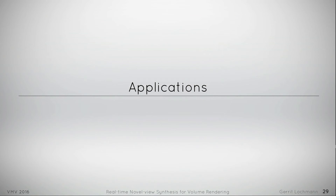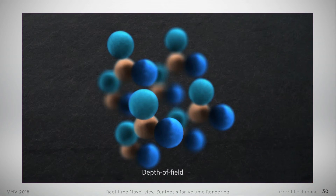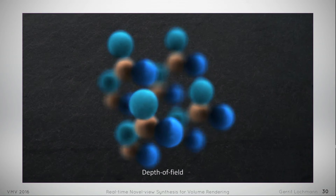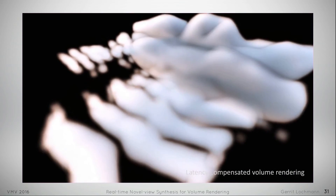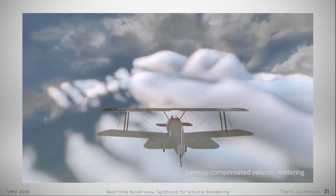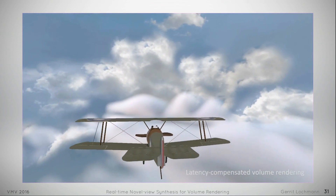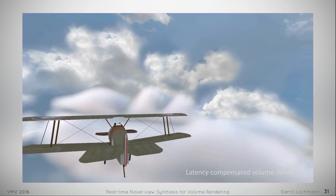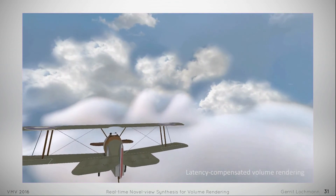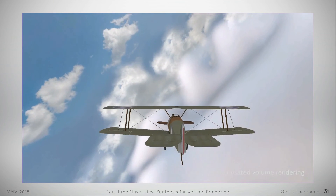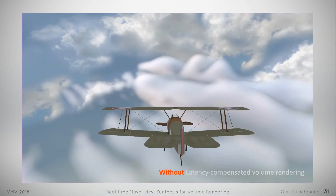Here you can see how depth of field is produced by our algorithm. And here we use our algorithm to reduce latency in a server-client setup, for example for games. The cloud is rendered on a server while the plane is rendered on a client, and latency would cause a lag that can be corrected by our algorithm.